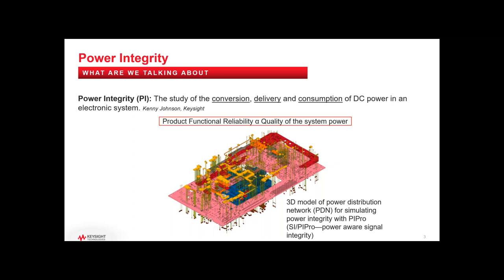Power integrity is the study of the conversion, delivery, and consumption of DC power in your system. Your product's functional reliability depends directly on the quality of the system power. A key term is PDN — the power distribution network — which includes everything from the bulk DC supply through planes, traces, caps, inductors, connectors, voltage regulation modules, right up to the gates on the IC being powered.